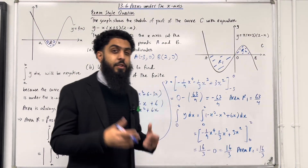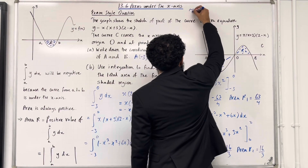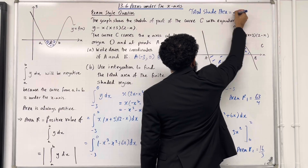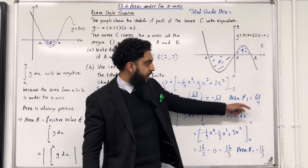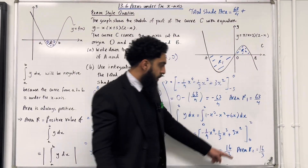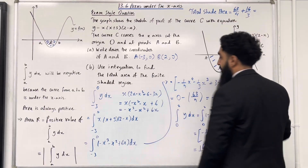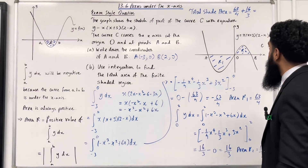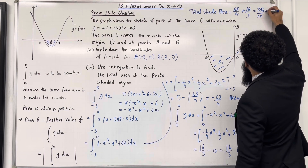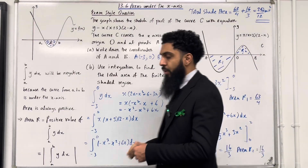We want to calculate the total shaded area. Total shaded area equals area R1 plus area R2, which is 63 over 4 plus 16 over 3. Putting this into the calculator gives 253 over 12 units squared. That is the final answer for the total shaded area.